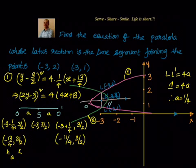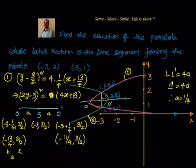The 4 factors cancel out — we have 1/4 and 4 which cancel — giving us parabola 1 equation: (2y - 3)² = 4x + 13.